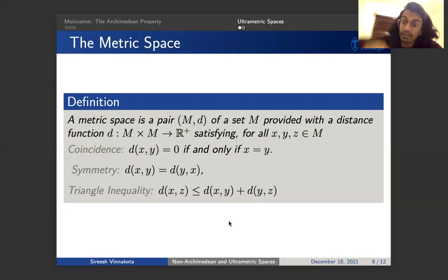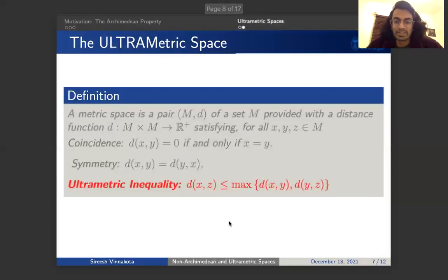And now we're going to strengthen the triangle inequality to something called the ultrametric inequality. And we're going to call it an ultrametric space, of course. So we're going to say that not only does it have to be smaller than the sum of the two distances, it actually has to be smaller than the maximum of the two distances.